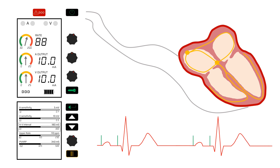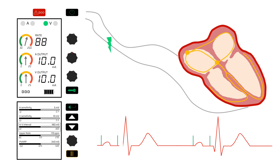This heart has no intrinsic activity at all. First, the pacemaker listens for atrial activity; when none is sensed, it paces the atria. It then waits to see if it will sense ventricular activity, and when none is sensed, it paces the ventricles as well. The time between A and V pacing is again set by the AV interval on the pacemaker.